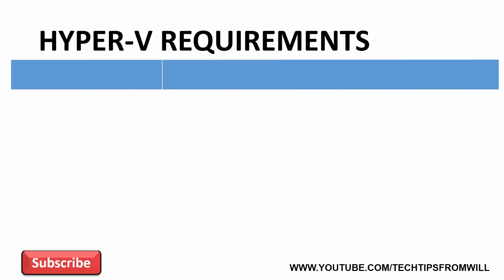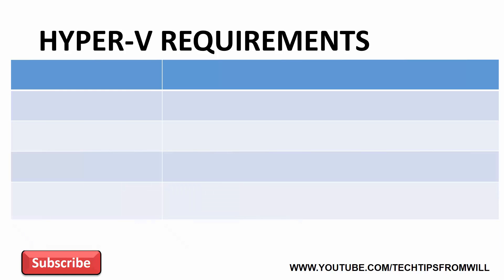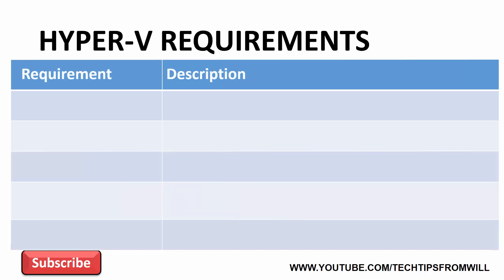With the best practices now covered, let's take a look at the actual requirements for Hyper-V. To install Hyper-V in Windows Server 2016, you'll require a 64-bit processor. You cannot install Hyper-V onto any 32-bit system.